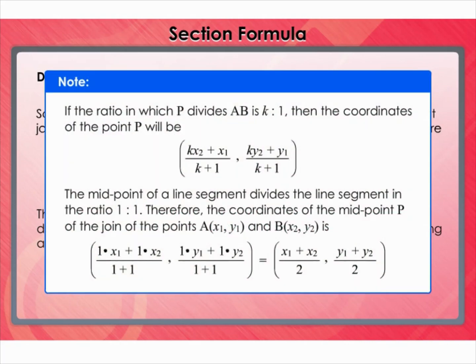Note: If the ratio in which P divides AB is k:1, then the coordinates of the point P will be expressed accordingly.